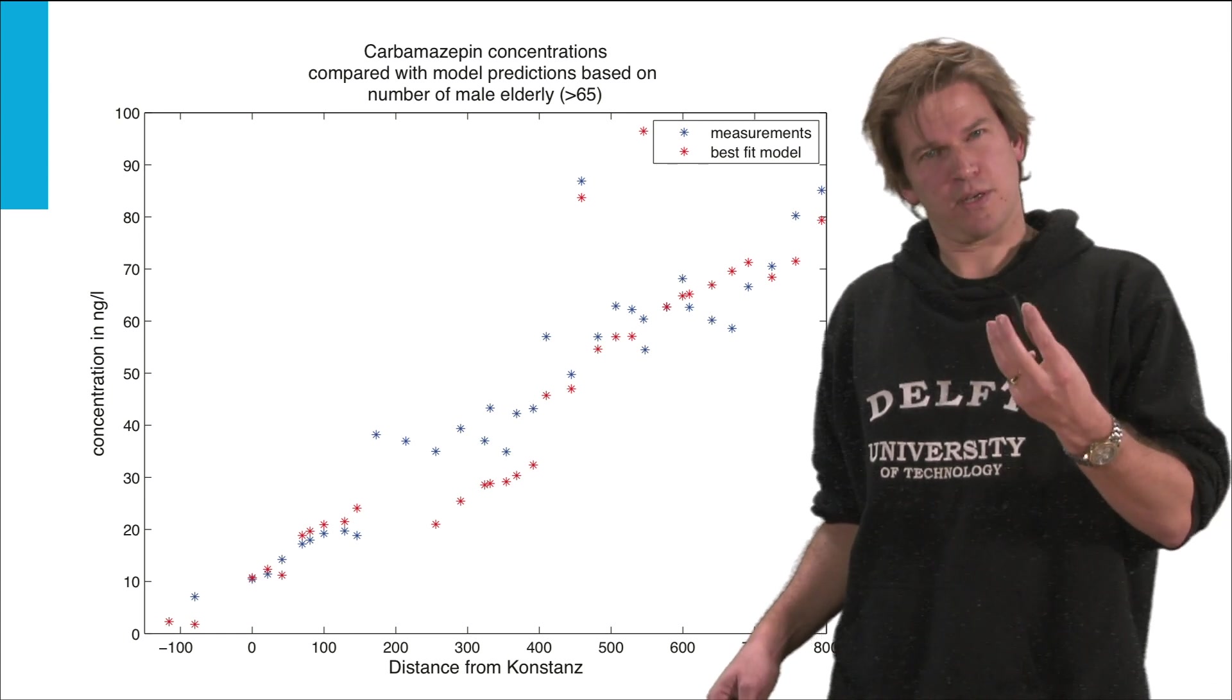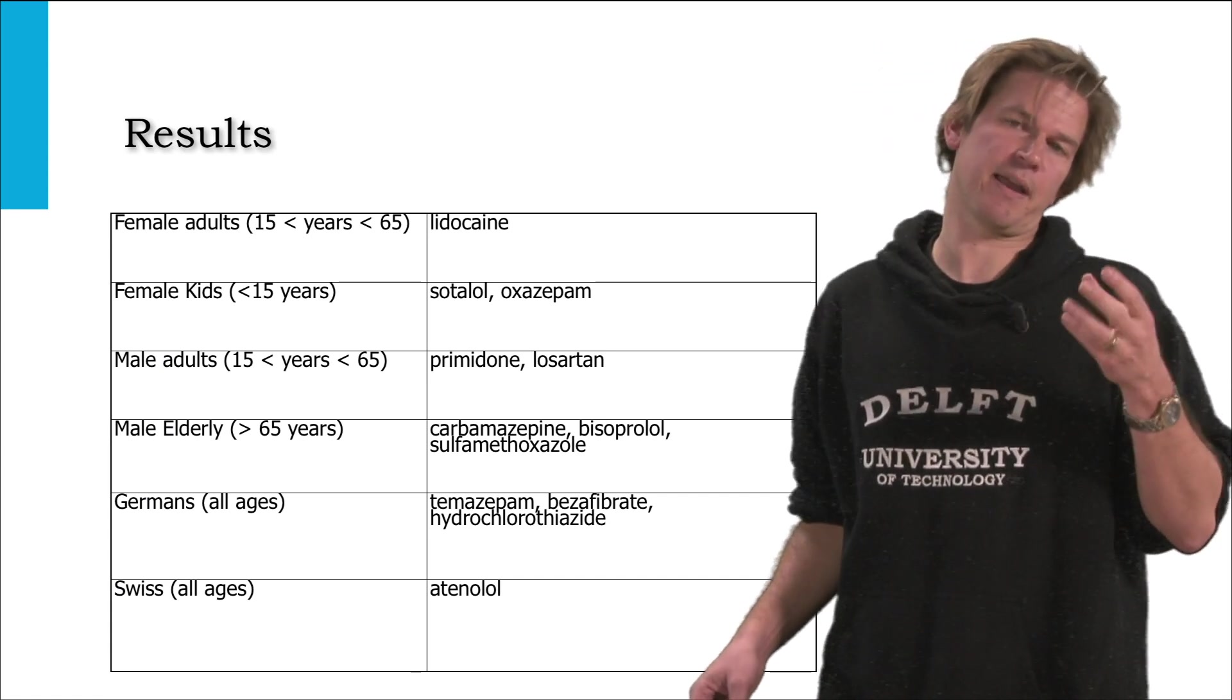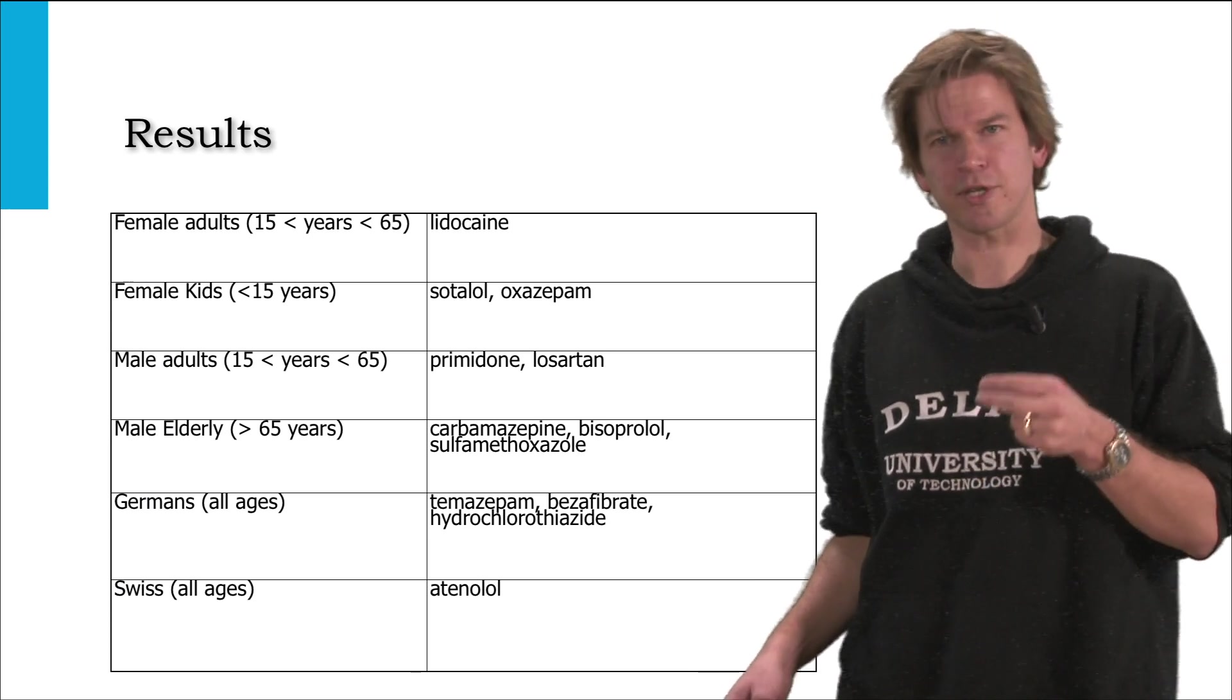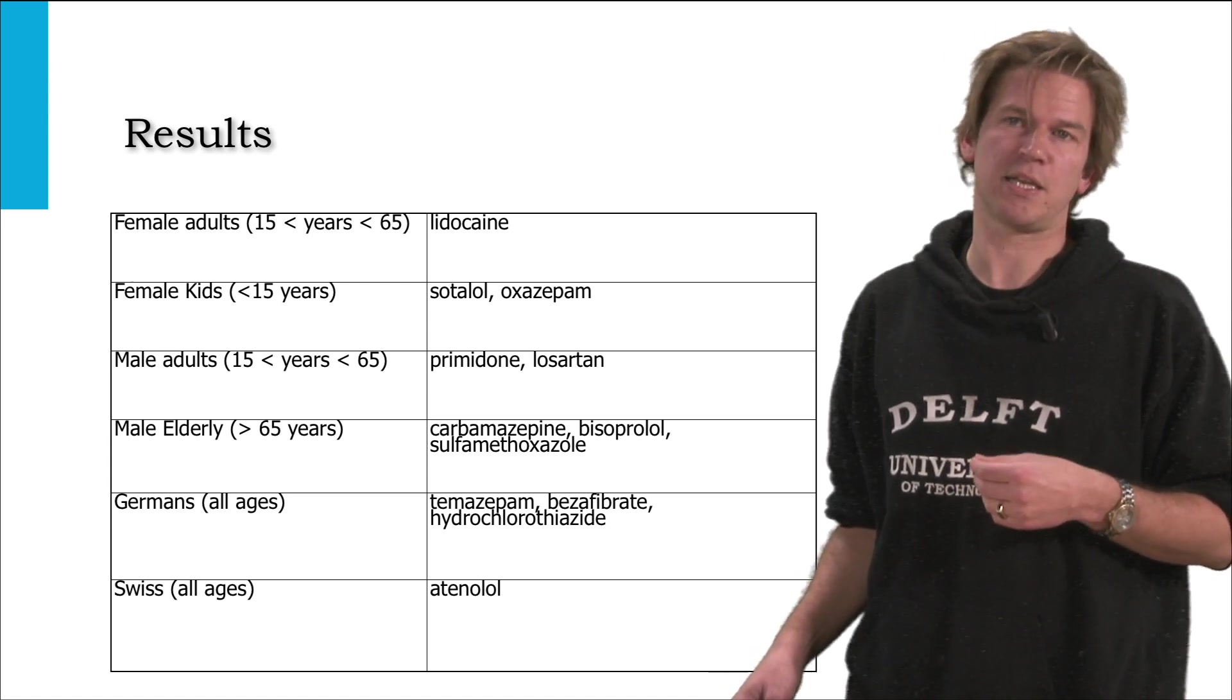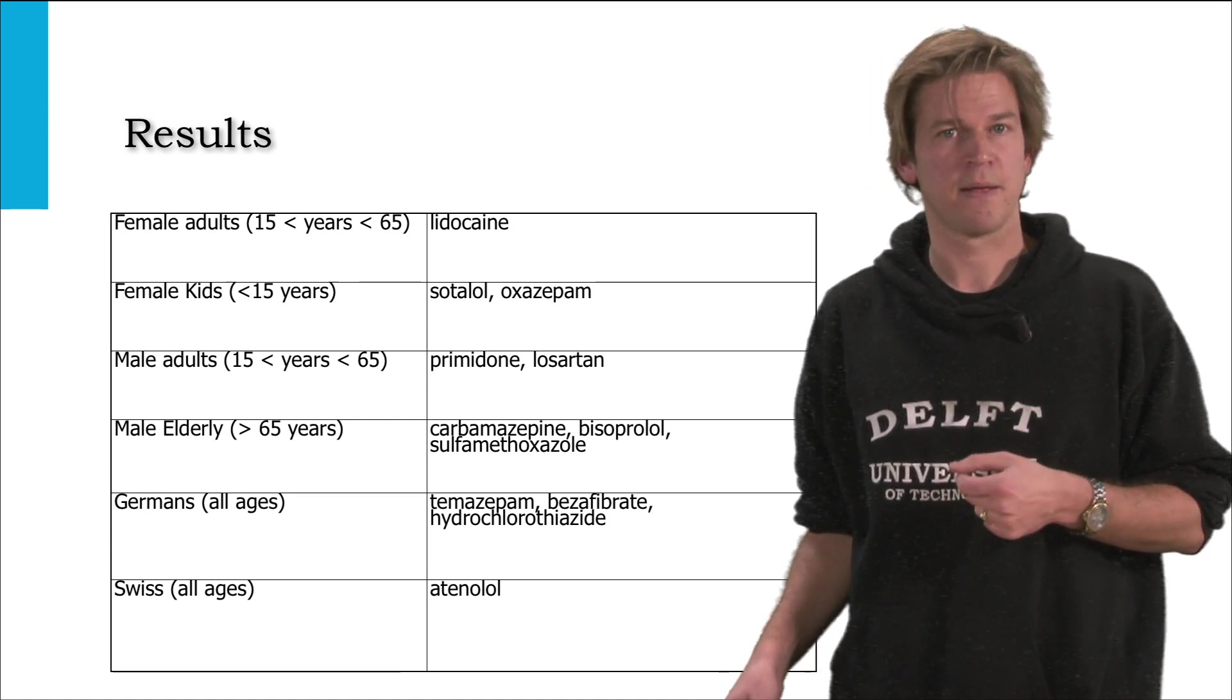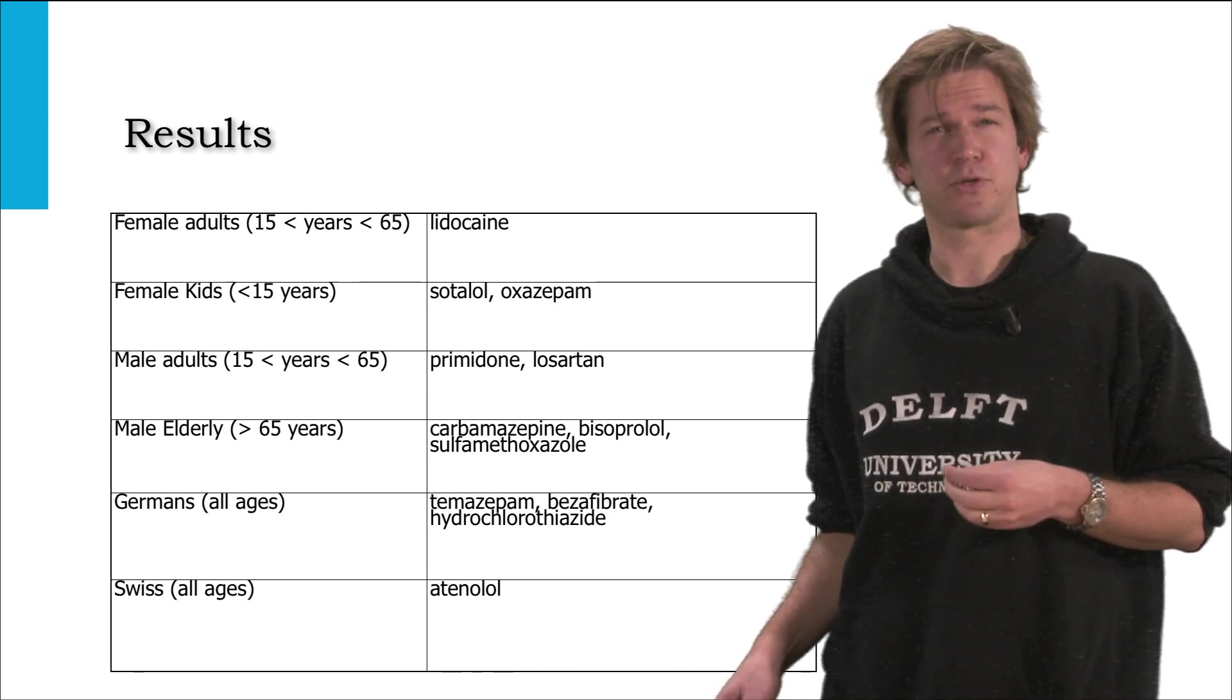20 of those chemicals had a significant relationship and in this table those are sorted by different demographic groups. Of course it has to be stressed that these are correlations and not per se causations. For example oxacepam, a sleep inducing drug, is not normally prescribed to female kids. However, in areas with a lot of female kids apparently more oxacepam is consumed.